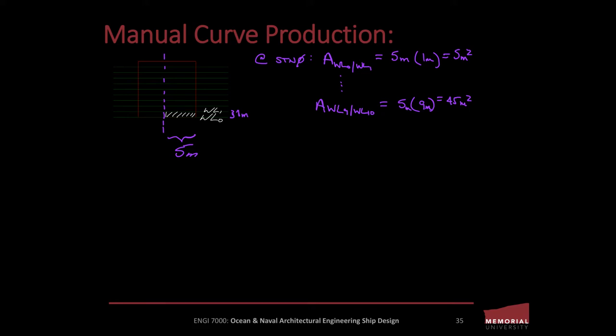We'll begin at station zero and first calculate the area enclosed by the plane at the keel and the plane directly above it. We know that the barge has a beam of 10 meters, so its half-breadth is 5 meters. Similarly, we can take the number of waterlines and divide it into the depth of the barge to arrive at a spacing of 1 meter. Given that our vessel is perfectly wall-sided and we've cut it with a series of horizontal planes, we can clearly see that each area at every waterline can be calculated as the area of a rectangle, where the base is the half-breadth of the barge and the height is the draft at each waterline.